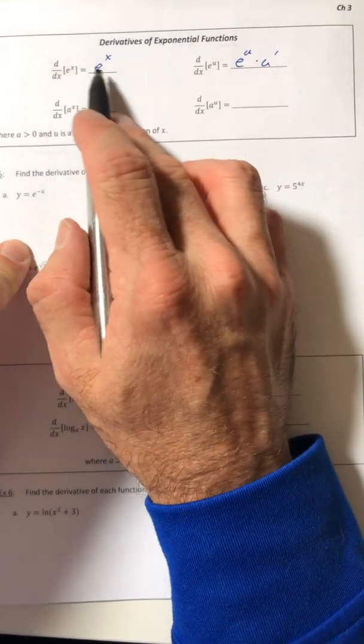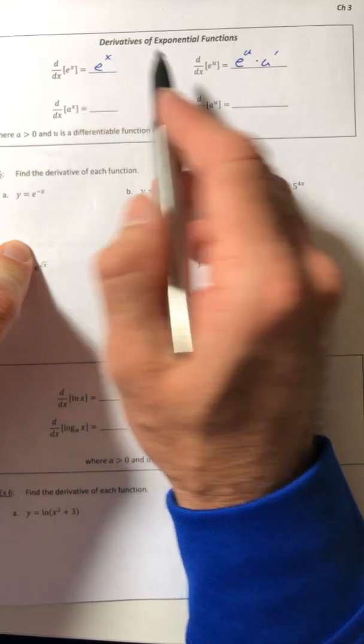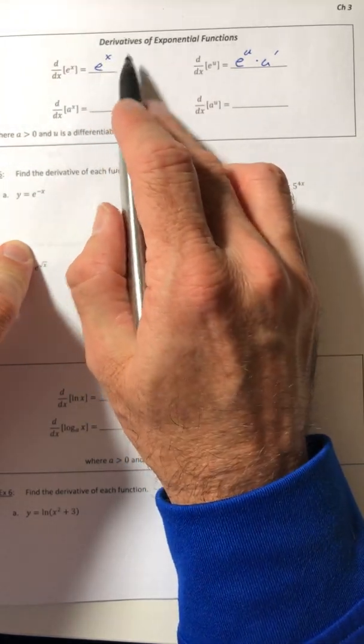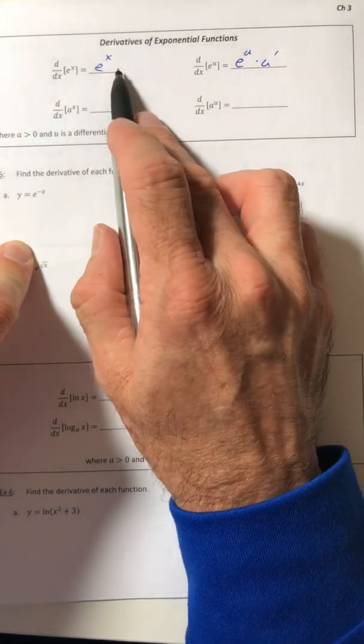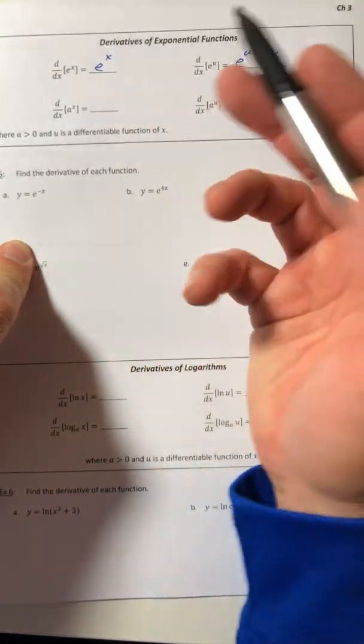And it's something that you did all along and just didn't know it. It's just because what's the derivative of x? Well it's a one, so that u prime is still really in there, it's just it was a one.